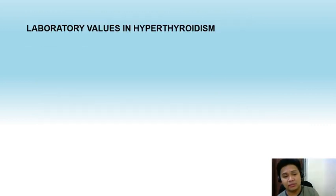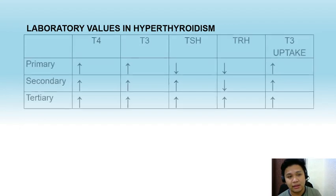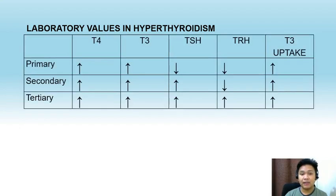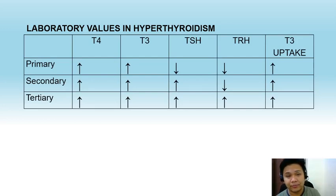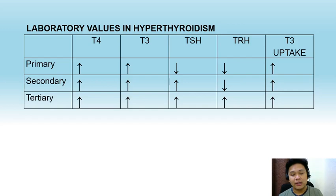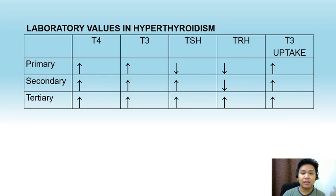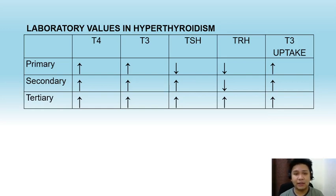Let us now talk about the laboratory values we see in hyperthyroidism as well as in hypothyroidism. Hyperthyroidism can be classified as primary, secondary, or tertiary. Primary hyperthyroidism results from increased production of T4 and T3 in the thyroid gland itself. In secondary hyperthyroidism, the pathology is found in the pituitary gland, wherein the pituitary produces high levels of TSH. In tertiary hyperthyroidism, the pathology is found in the hypothalamus.